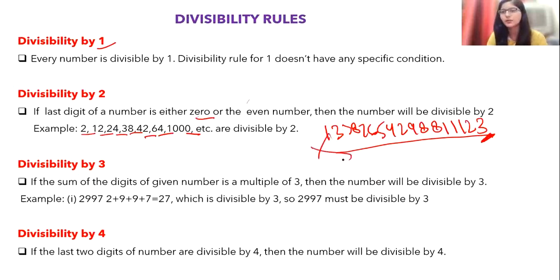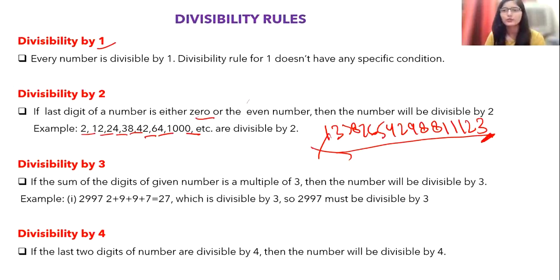For divisibility by 3: if the sum of the digits of a given number is a multiple of 3, then the number is divisible by 3. Also, just watching the video is not enough — start making notes in a fresh notebook. After some time you'll forget things, so write down divisibility rules, cyclicity rules, and important formulas as you go through this video.